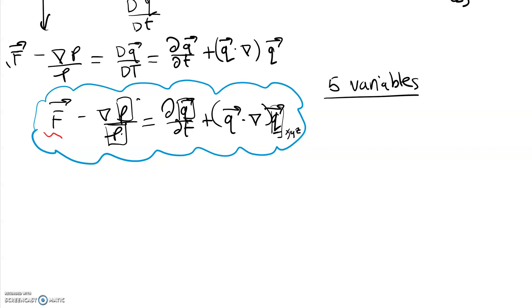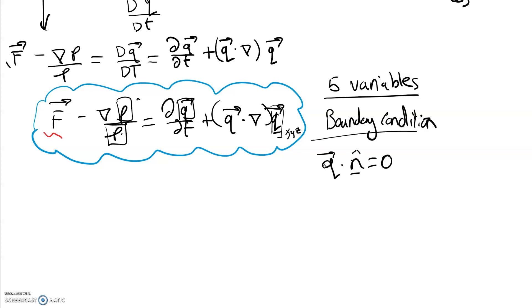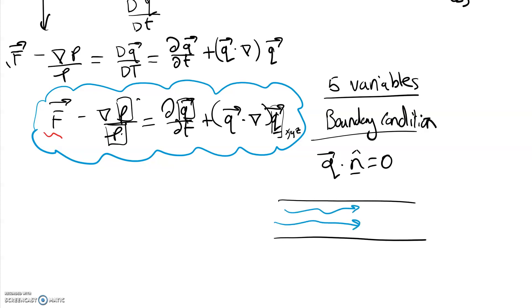With five variables we need a boundary condition to solve the equation. The condition we usually take is q dot n equals zero, which means that if we have a tube or pipe with fluid flowing through it, there is no velocity component of the fluid in the direction of the normal — so none of the fluid is hitting the sides of the pipe in the normal directions. That's what the Euler equation is.